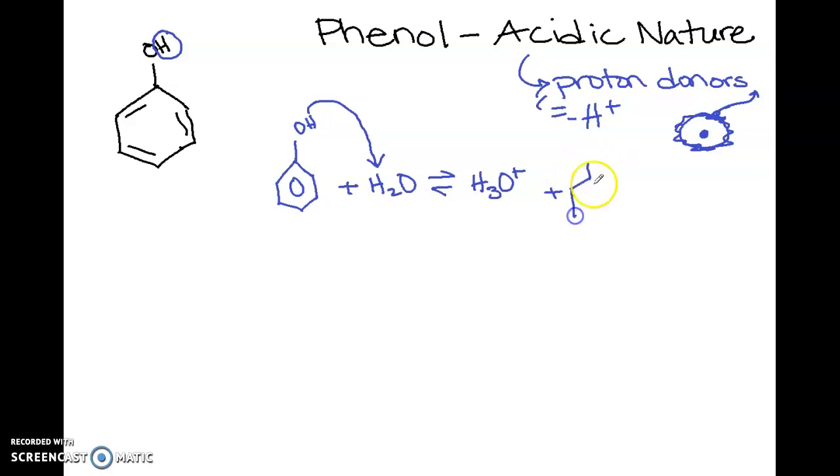And then what we get here is then an ionic version of the phenol, where we still have our benzene ring. And then we have this oxygen that, because it's kept the electron from that hydrogen, is negatively charged. And so that's that proton donor.